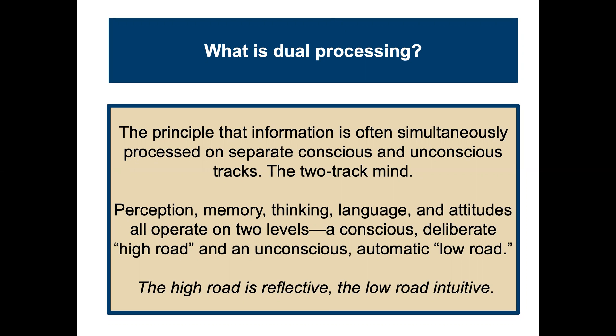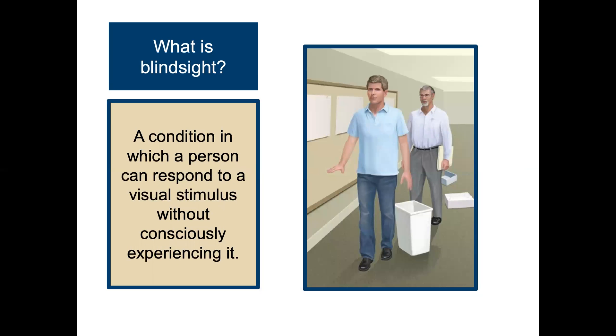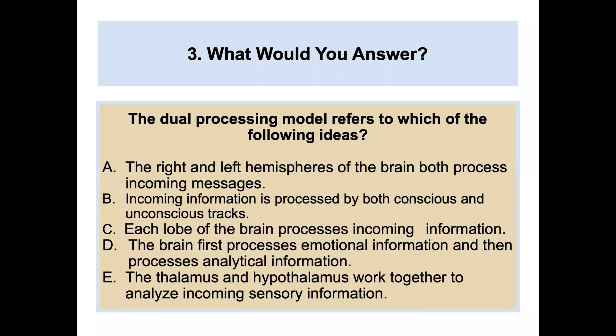Perception, memory, thinking, and attitudes all operate on two levels: a conscious, deliberate high road and an unconscious, automatic low road. The high road is reflective and the low road is intuitive. Daniel Kahneman, a prominent economist, has written and spoken extensively about this. Blindsight is a fascinating related concept — a condition in which a person can respond to a visual stimulus without consciously experiencing it. For the practice question, dual processing refers to the idea that incoming information is processed by both conscious and unconscious tracks.